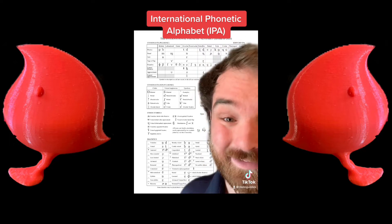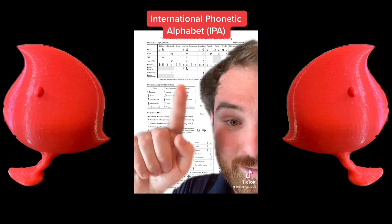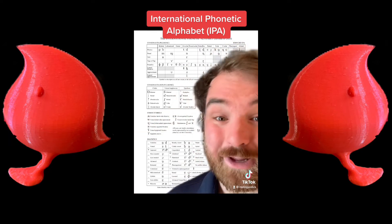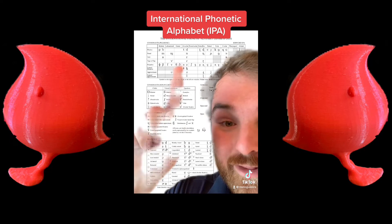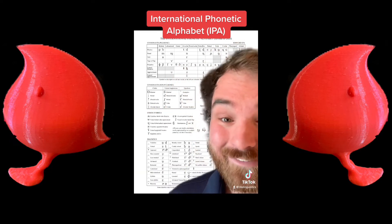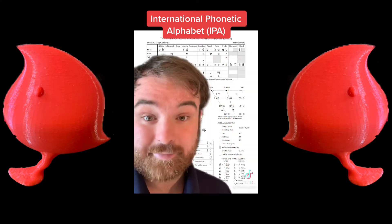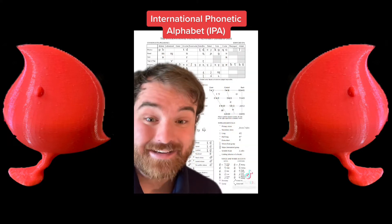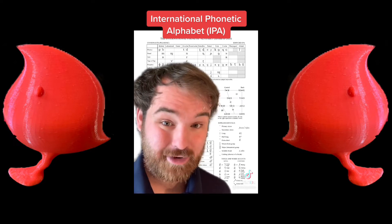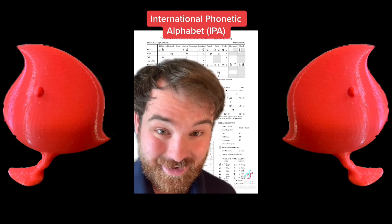You might recognize some of these characters, like N, S, Z, or L. With others, you might not recognize the letter but you know the sound, like V or SH. And there's a lot that we don't have in English, like BR or R. But this is how linguists can write down exact sounds. It's widely used throughout linguistics and really common on Wikipedia pronunciation guides.